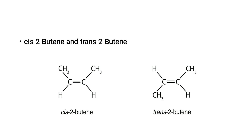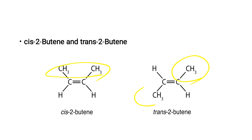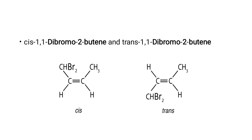Another example is cis-2-butene and trans-2-butene. In cis-2-butene, the two methyl groups are attached on the same side. In trans-2-butene, the two methyl groups are attached on opposite sides. A further example is cis- and trans-3-bromo-2-butene, where the same rule applies.